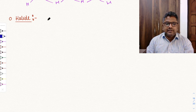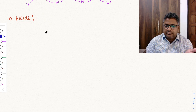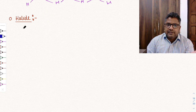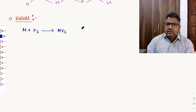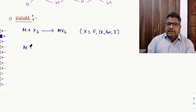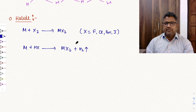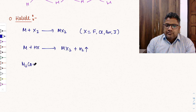Halides of group 2 can be prepared by three methods: (1) direct reaction of metal with halogen — M + X2 → MX2, where X = F, Cl, Br, I; (2) reaction of metal with haloacid — M + HX → MX2 + H2; (3) reaction of metal carbonate with haloacid — M2CO3 + HX → MX2 + H2O + CO2. For the third method, fluorine (HF) is usually avoided, so X = Cl, Br, or I.